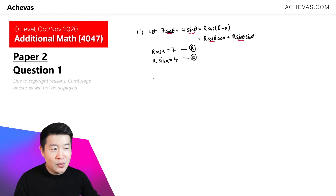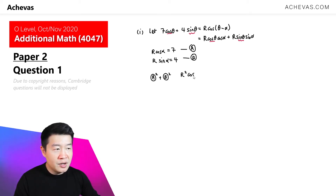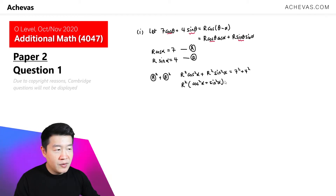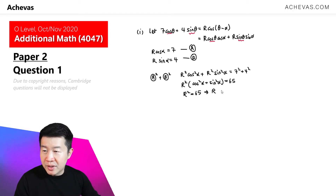I'm going to compute equation A squared plus equation B squared. That gives us R² cos²α + R² sin²α = 7² + 4². Factorizing out R², we get R²(cos²α + sin²α) = 65. Since cos²α + sin²α = 1, we have R² = 65, which means R = √65, since R is a positive number.